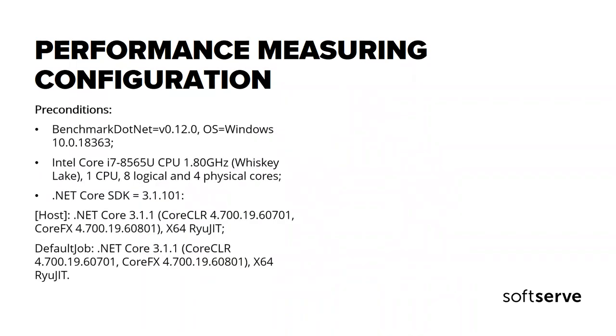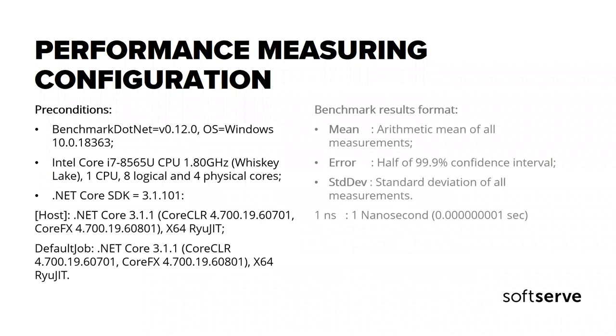As a tool for measuring performance, I used the BenchmarkDotNet NuGet package. It's free and easy to use and allows you to quickly get the required performance measurements of individual methods. The package was used with the following configuration: the latest version of BenchmarkDotNet, the latest version of Windows 10, Intel Core i7 CPU, and the latest version of .NET Core SDK.